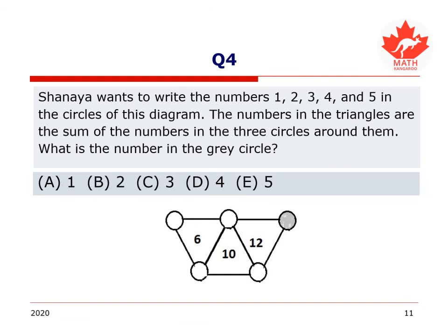Let's try one more. Shania wants to write the numbers 1, 2, 3, 4, and 5 in the circles of this diagram. The numbers in the triangle are the sum of the numbers in the three circles around them. What is the number in the gray circle? Top right there. So again, please pause the video and try and do what Shania is doing. Try and put the numbers 1, 2, 3, 4, and 5 into the circles so that the three numbers around 6 sum up to 6, the three numbers in the circles around 10 sum up to 10, and the three numbers in the circles around 12 sum up to 12.